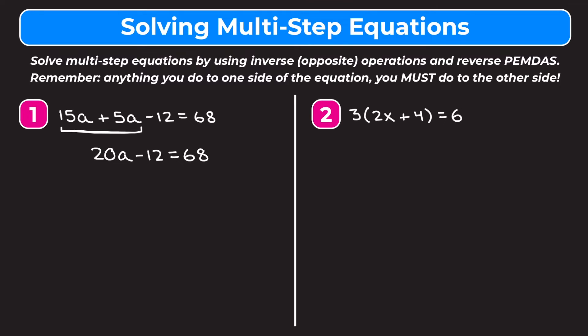Reverse PEMDAS tells us to get rid of the minus 12 before the 20 that's being multiplied. To get rid of minus 12 we add 12, because addition and subtraction are inverses. We add 12 to both sides. On the left side the minus 12 and plus 12 cancel out, leaving 20a. On the right side 68 plus 12 gives us 80.